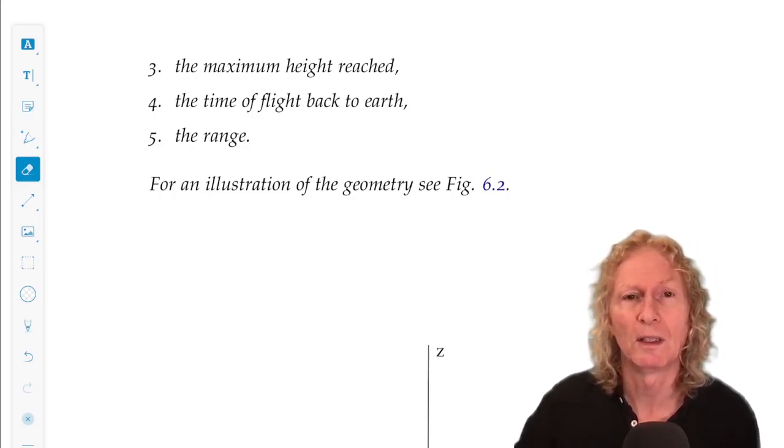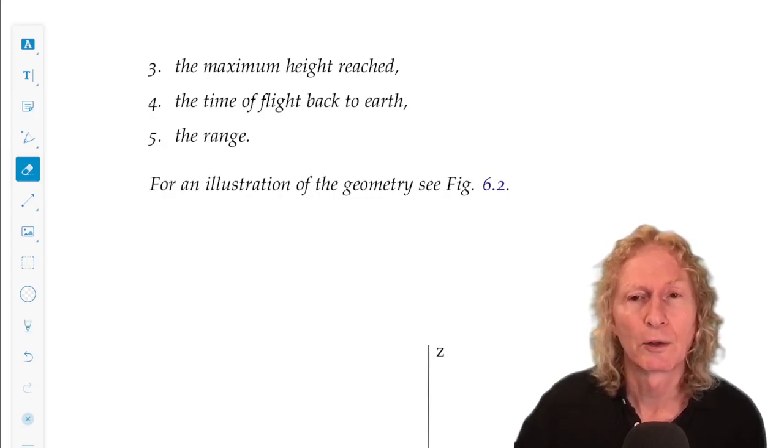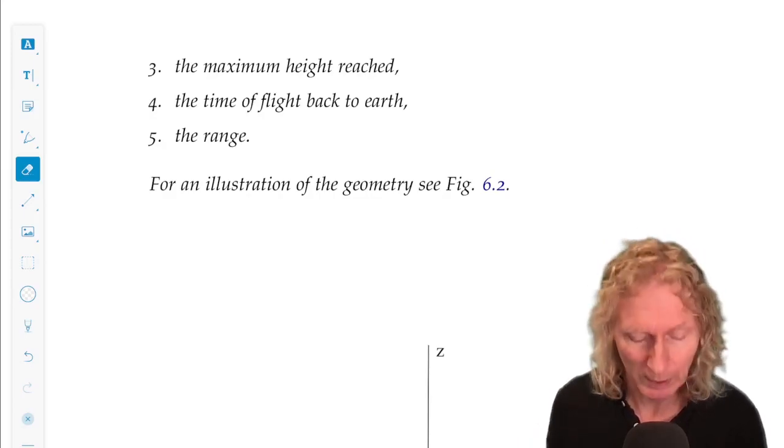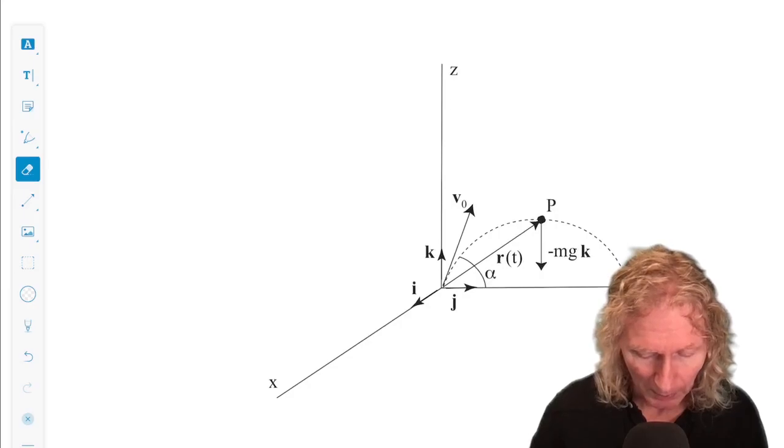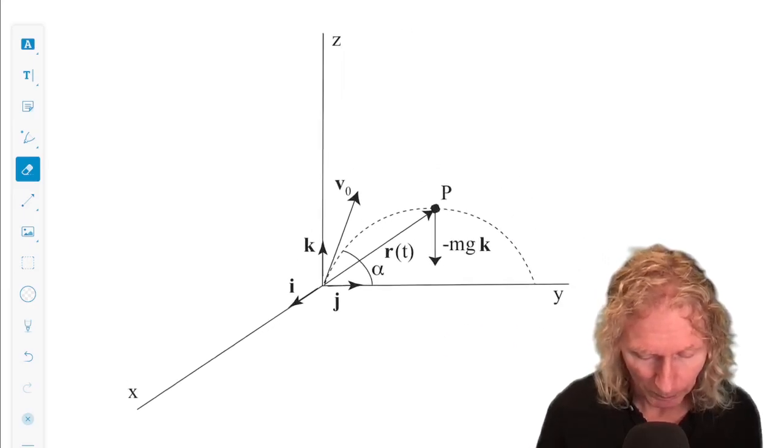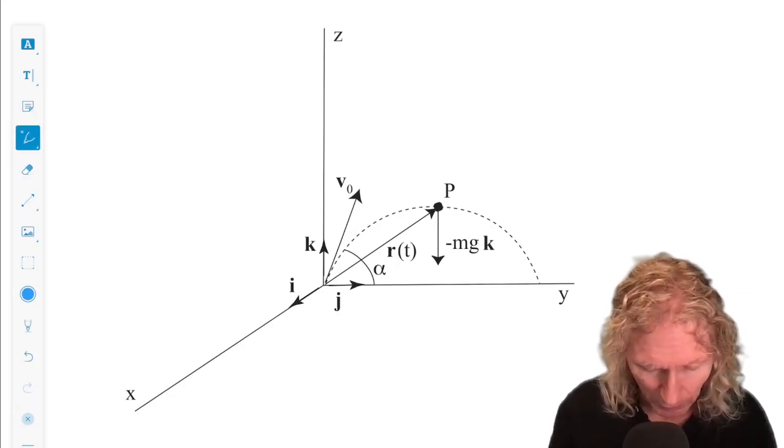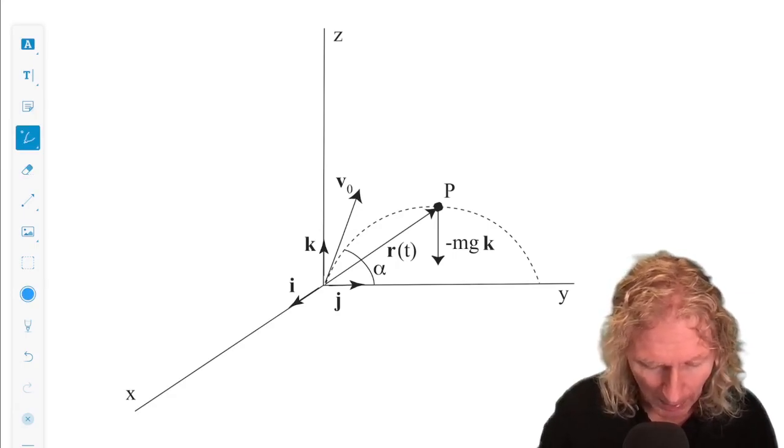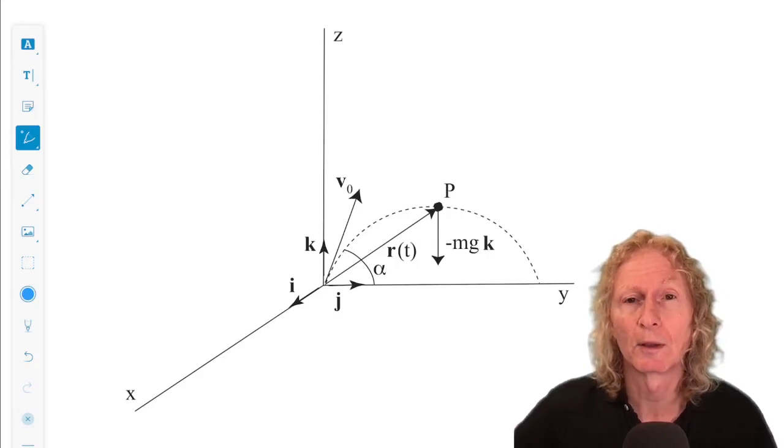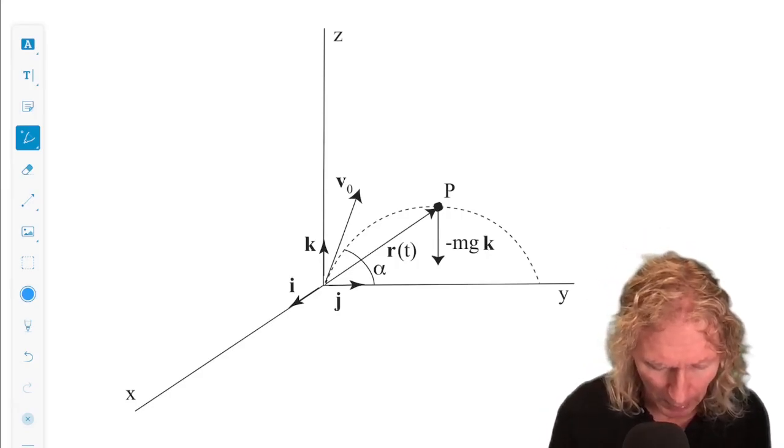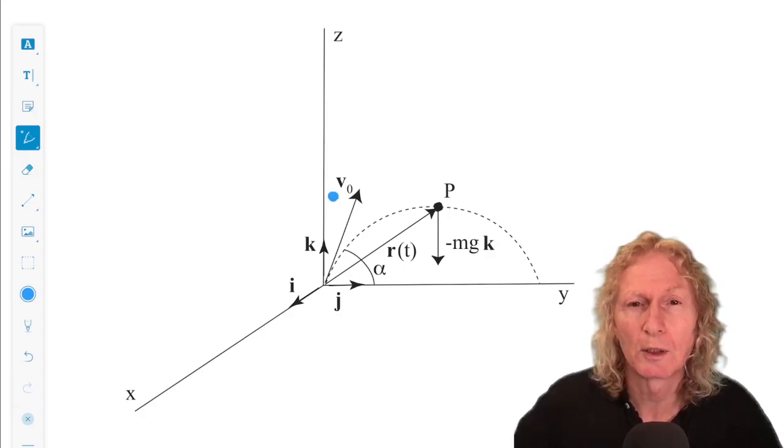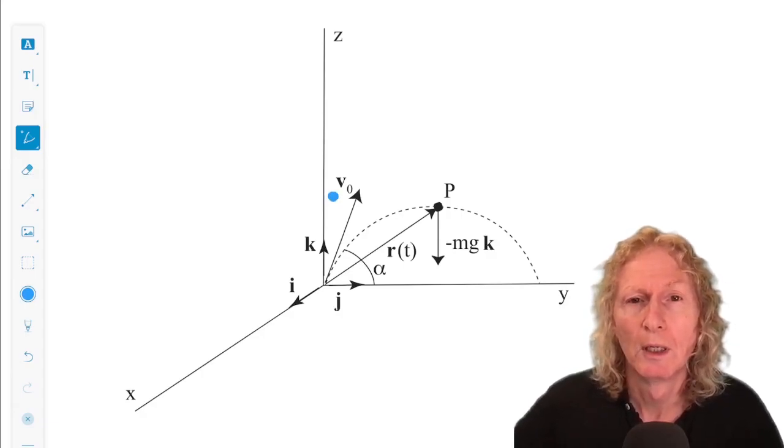The range is the largest horizontal distance that the particle travels. And this is the geometry. Particle is denoted by P. Position vector r of t. Alpha is the angle with respect to the initial velocity, v-naught. And we assume that the initial velocity vector is in the yz-plane.